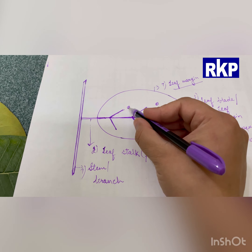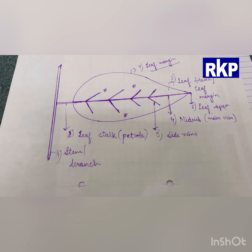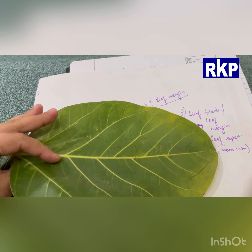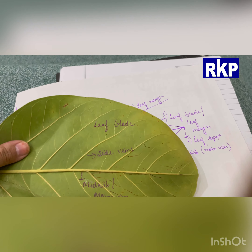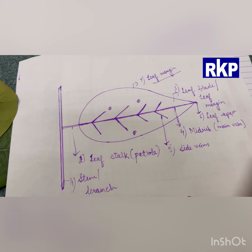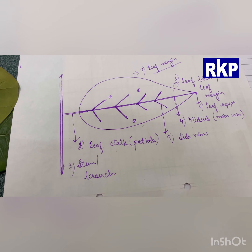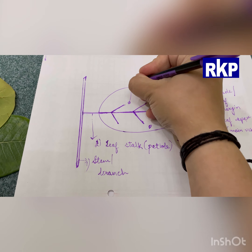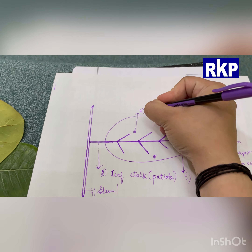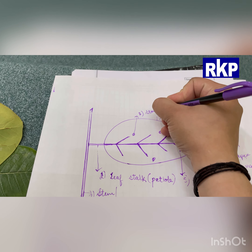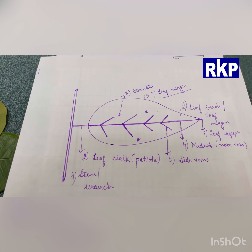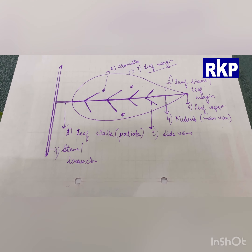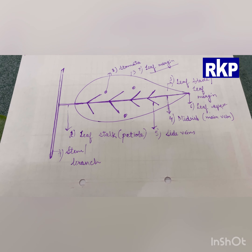These tiny pores are so very small that we cannot even see them. They are present especially on the underside of the leaf and are called stomata. So this is the structure of the leaf — I have shown you diagrammatically and on a real leaf. You all have to practice this diagram with a pencil and label each and every part appropriately.